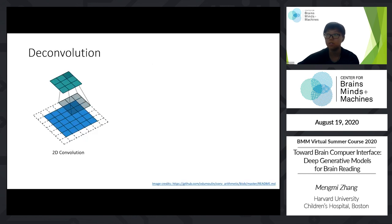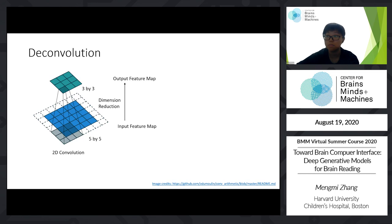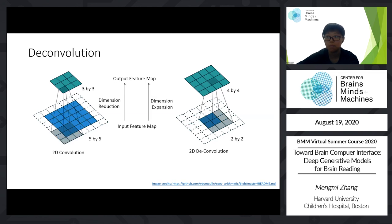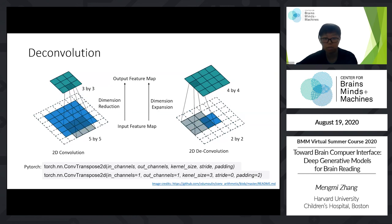Before going straight to GANs, I want to introduce a very important concept in deep learning: deconvolution. In the past, we've talked a lot about convolution — the blue patch is the input and the cyan patch is the output feature map. 2D convolution typically reduces the output feature map dimension; for example, from 5×5 to 3×3. In contrast, deconvolution does the opposite — it upsamples the input feature map from 2×2 to 4×4. In PyTorch, here is the function for deconvolution and an example usage below.